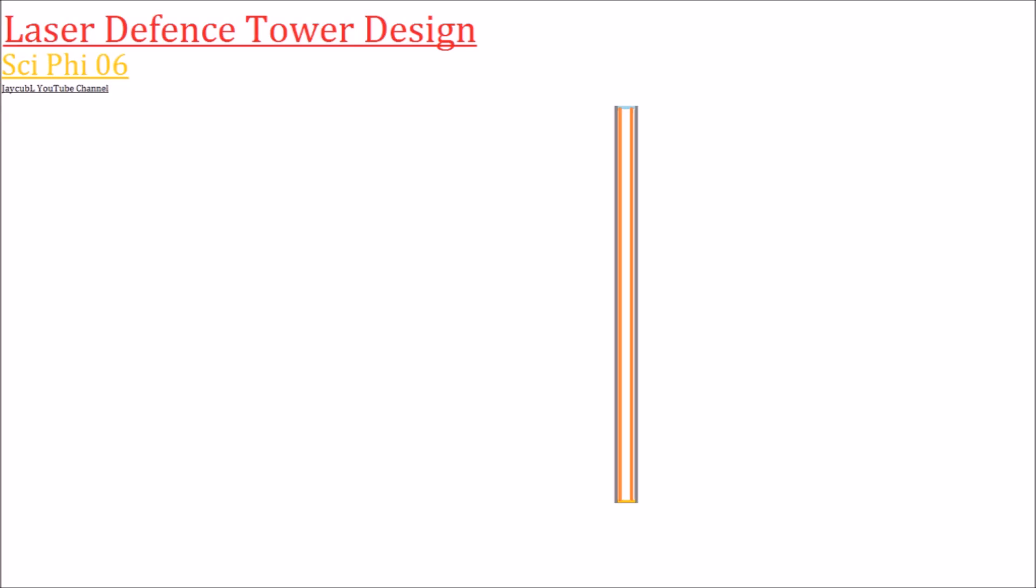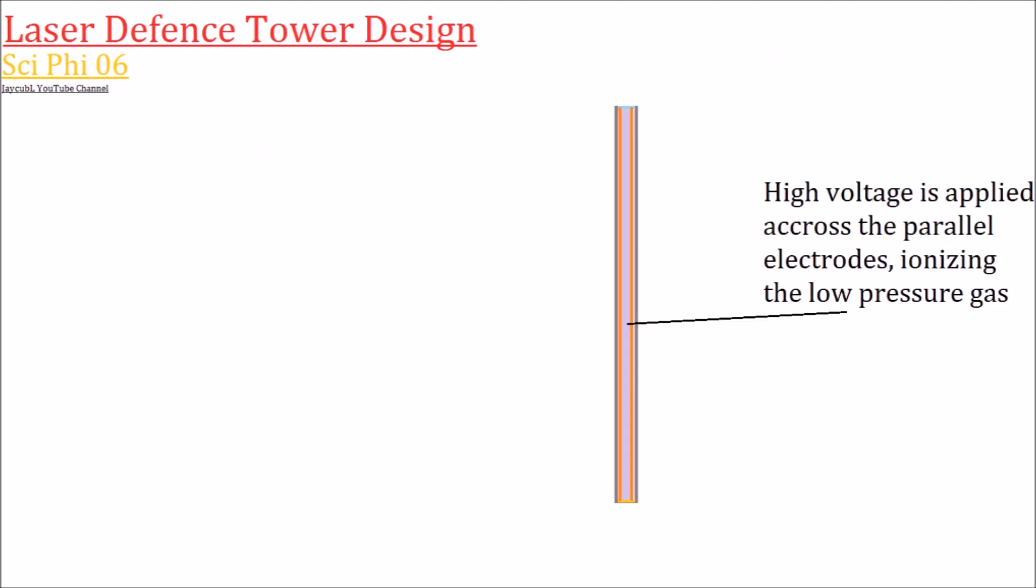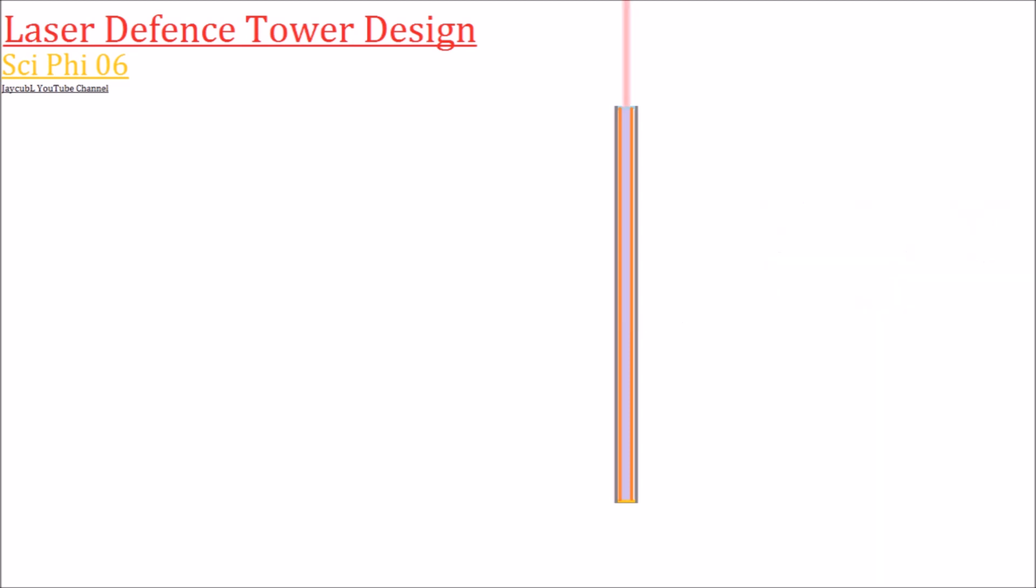The construction of the laser itself is pretty simple. It's a long tube filled with low pressure gas that has two parallel metal electrodes. At one end there's a mirror and at the other end there's a zinc selenide window that allows the infrared light to pass. High voltage is applied across the electrodes which ionizes the gas in between them and the laser functions.